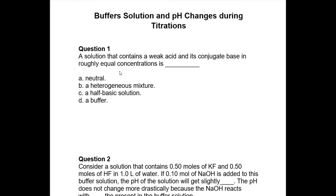Question one says: a solution that contains a weak base and its conjugate base in roughly equal concentrations is... 'neutral' is a tempting option if you don't know what you're doing. The conjugate base is basically the salt of the acid, so this question is really asking what a mixture of a weak acid and its salt is called — and the answer is a buffer solution. So your answer is D.